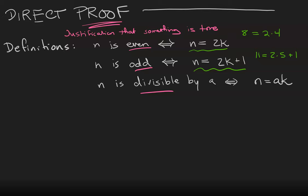And finally, we'll say that n is divisible by the non-zero integer a if there exists an integer k such that we can write n equals a times k.